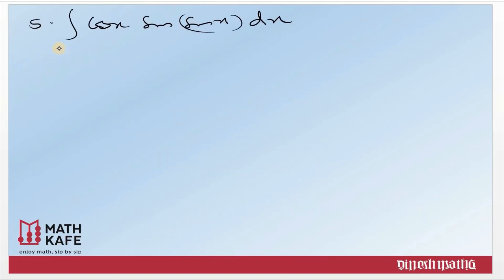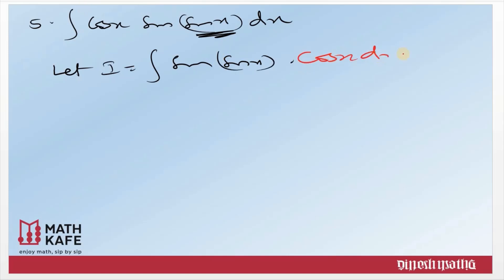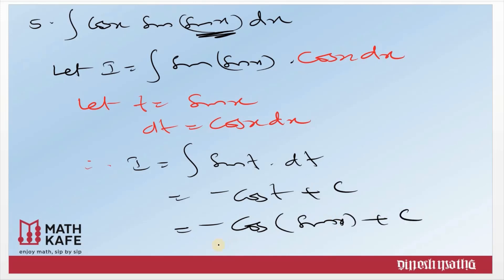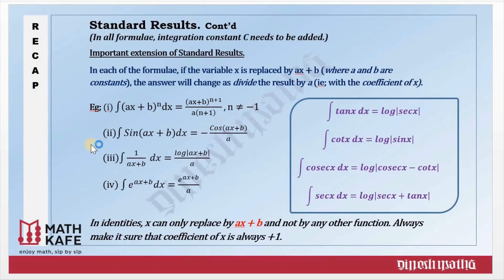Let us see the next example: integral of cos x · sin(sin x) dx. Clearly here sin(sin x) we cannot integrate, so we choose sin x as the substitution. Rewrite as I equal to sin(sin x) · cos x dx. Let t equal to sin x, so dt equals cos x dx. The integral becomes the integral of sin t · dt, which equals minus cos t plus C, giving minus cos(sin x) plus C. Please differentiate and cross check. Some more results from the same topic — keep a copy and learn all results well to master integrals.